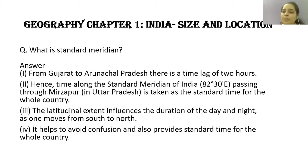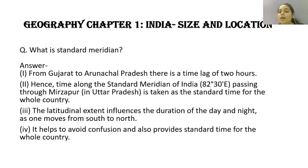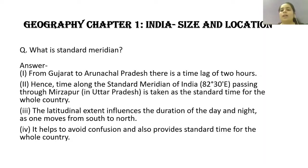If we look at Arunachal Pradesh in the east — the easternmost state — and Gujarat in the west, from Arunachal Pradesh to Gujarat there is a time lag of 2 hours. If person A is standing in Gujarat and it is 1 PM, then person X in Arunachal Pradesh would see 3 PM. There is a 2-hour time difference. Why? Because the earth moves from west to east, so Arunachal Pradesh faces the sun first, then Gujarat — creating a time lag.